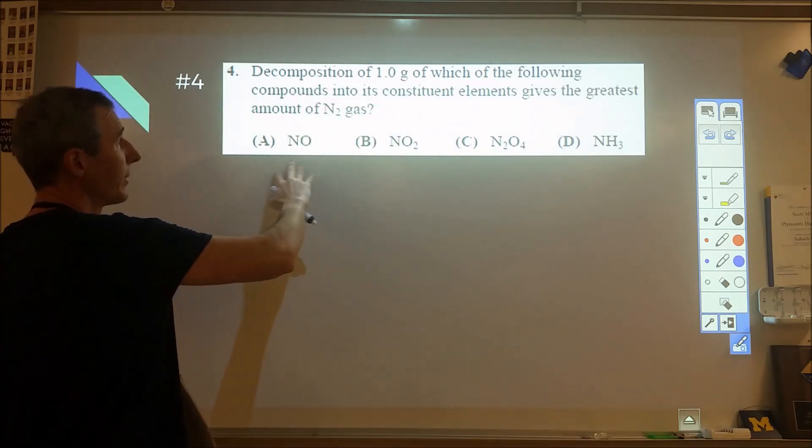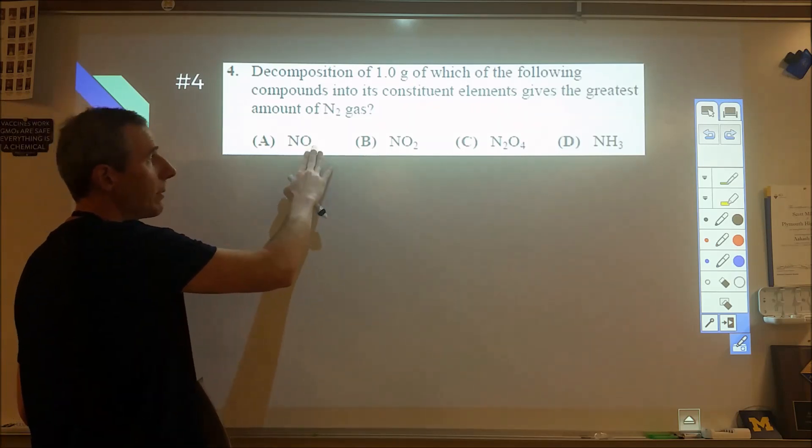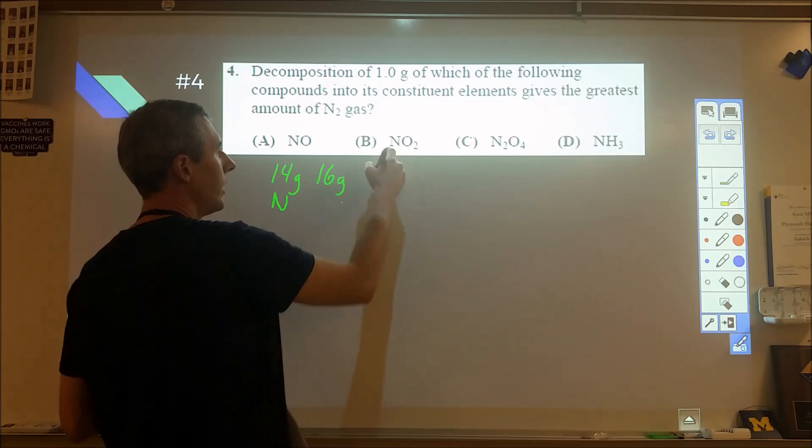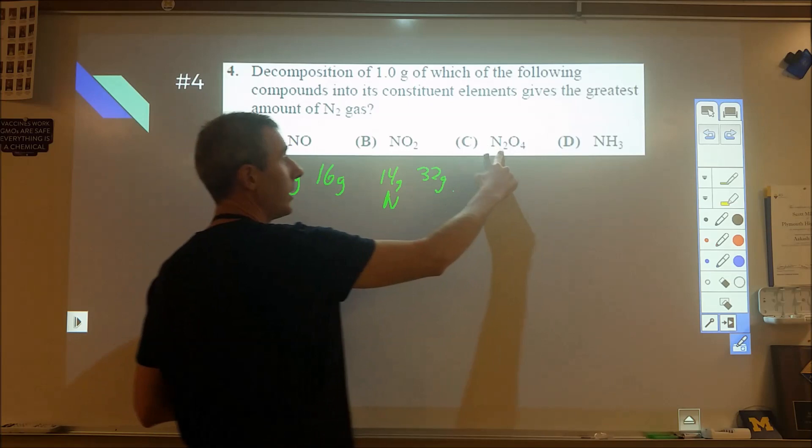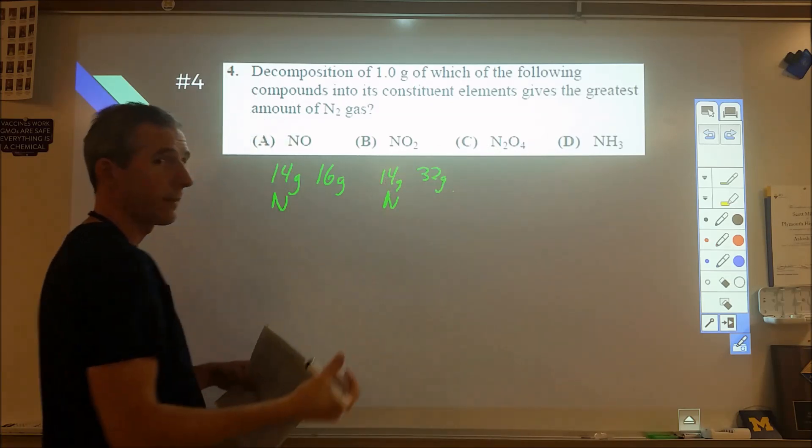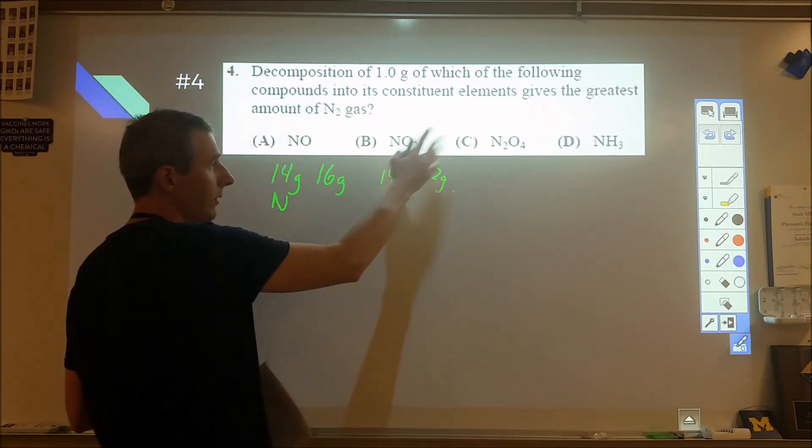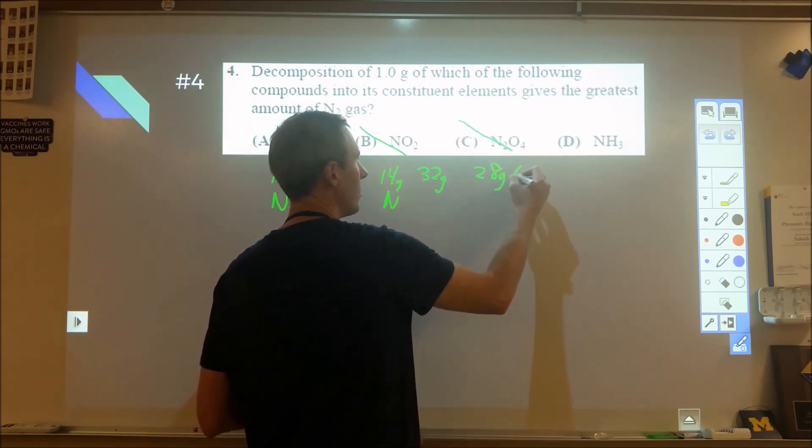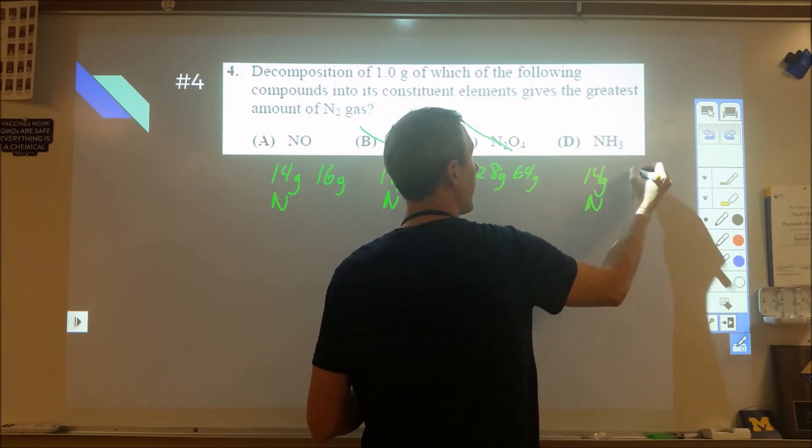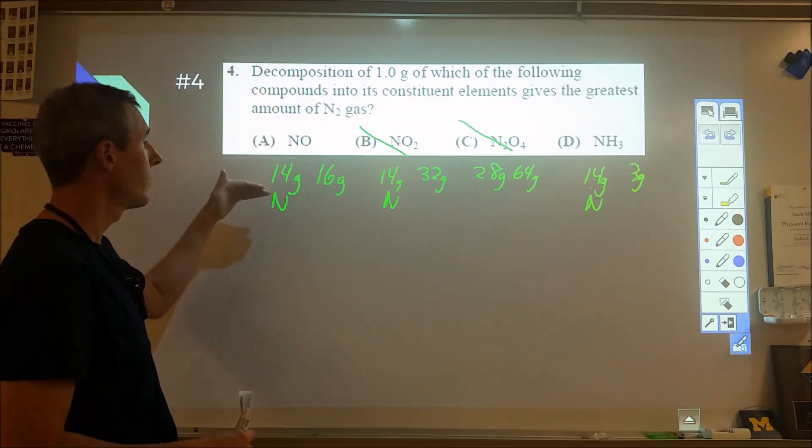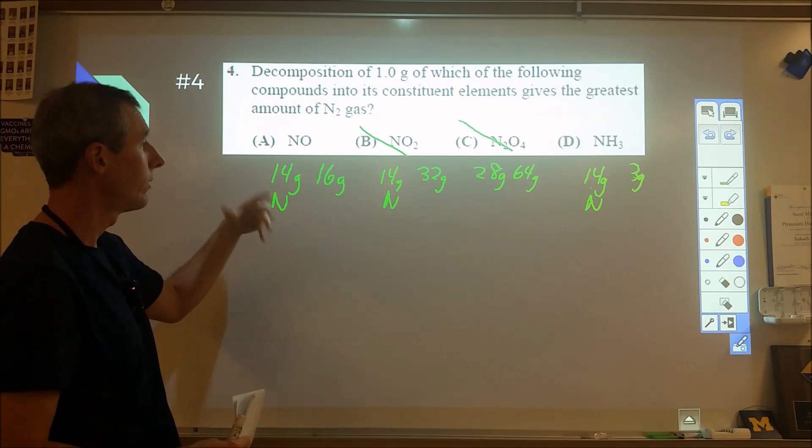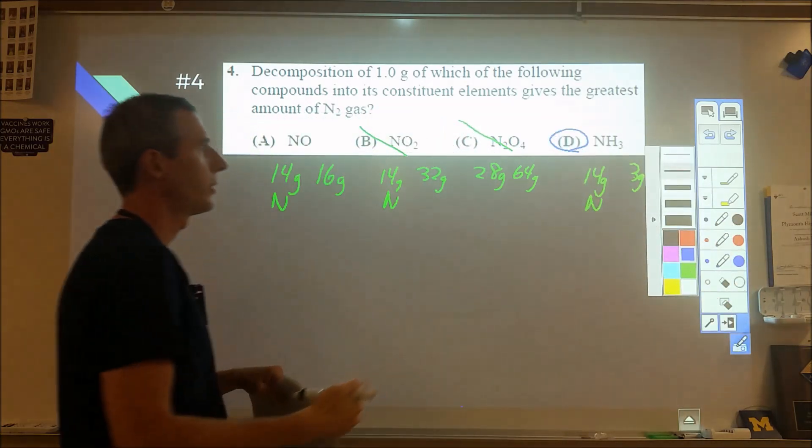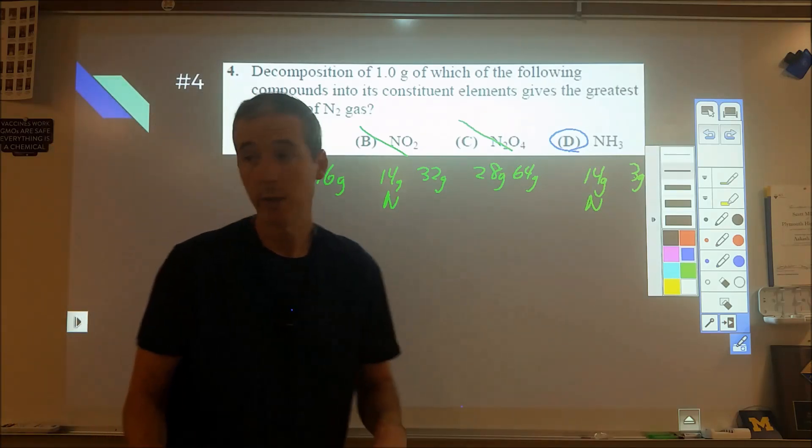Number four, one gram of the following compounds. You don't want to carry through any calculations. You want to look at how much nitrogen you have and how much other stuff. Assuming one mole of each, NO has 14 grams nitrogen and 16 grams other stuff. NO2 has 14 grams nitrogen versus 32 grams other stuff. NO2 and N2O4 give the same percent compositions. NH3 is 14 grams nitrogen and 3 grams other stuff. Which one will give us the most nitrogen gas? The one with the greatest percentage of nitrogen. That's very clearly D. We don't have to do any calculations.